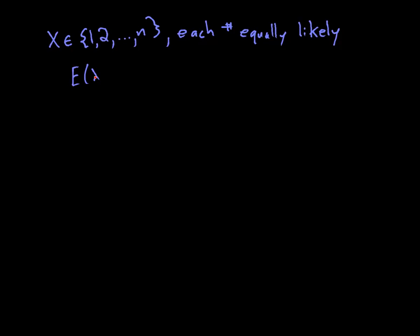To get the expectation, we take the sum of the products of the values and their probabilities. So the sum here is going to range over all the possibilities from 1 to n. The value is k and the probability is the probability that X equals k. So this is the sum from k equals 1 to n of k. And I know that for a discrete uniform distribution, the probability that X is any one of these values is just 1 over n.